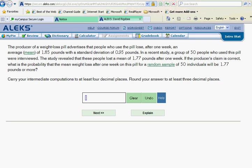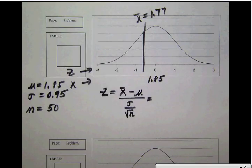I've set up the problem over here on our form as we've done before. Notice that they're telling us the mean is 1.85, the standard deviation is 0.95, and we have a sample size of 50.